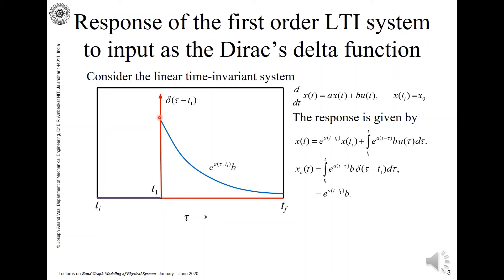Suddenly, the input spikes and all of a sudden your response starts from b and goes like this in an exponential manner. So, here it is e raised to a into tau minus t1 into b.